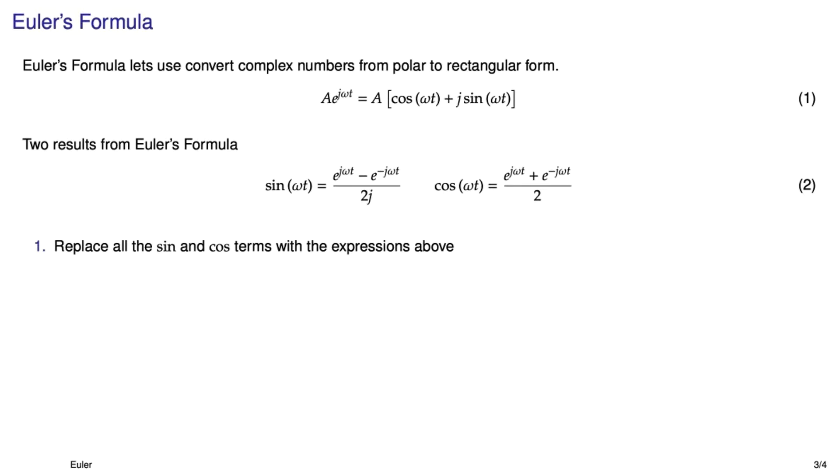If you manipulate equation 1 a little bit you can get the two results shown in equation 2 for sine and cosine. What we're going to do is take trig functions that are the product of a bunch of sines and cosines and turn them into the sum of a bunch of sines and cosines because sine and cosine is almost always in a Laplace transform table and once we have them in that summed form we can just pretty easily write out the Laplace transforms.